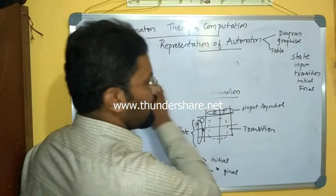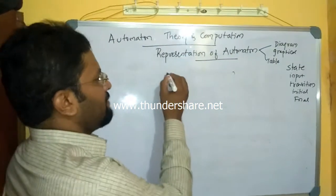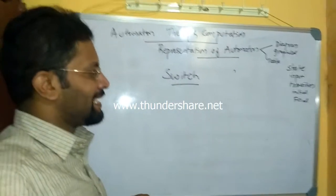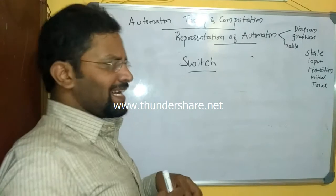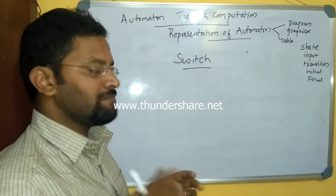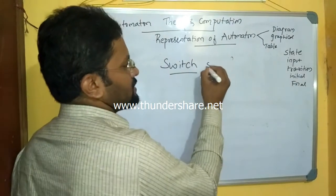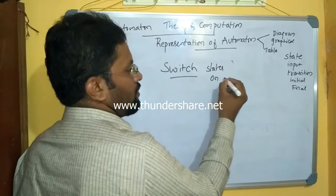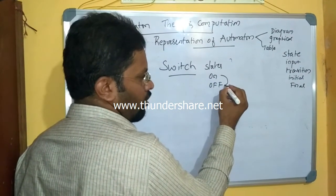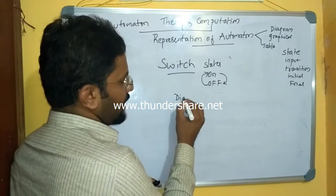Now let's take an example of an automata to understand how it is represented. We take a very simple example — a switch — because it can be understood very easily and clearly. A switch is a simple machine that has two states: on and off. There can be a change of state from on to off or from off to on.